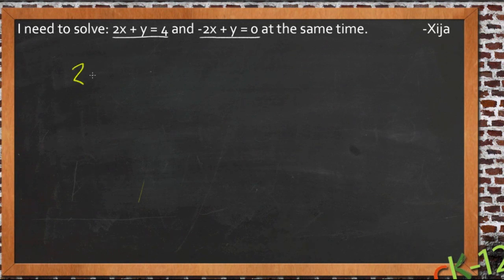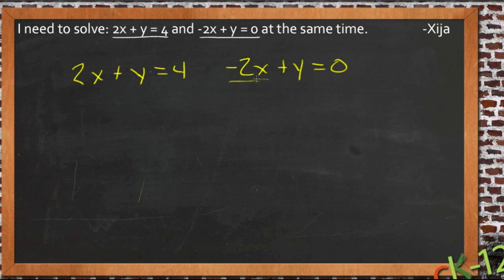Here we have 2x plus y equals 4. So we have positive 2x's here and a positive 1y, where in your other equation you have negative 2x's plus 1y equals 0. So here we have a negative 2x. Now normally the first step in elimination is setting up one of your variables to be opposite itself in the other equation. Here that's already done for us.